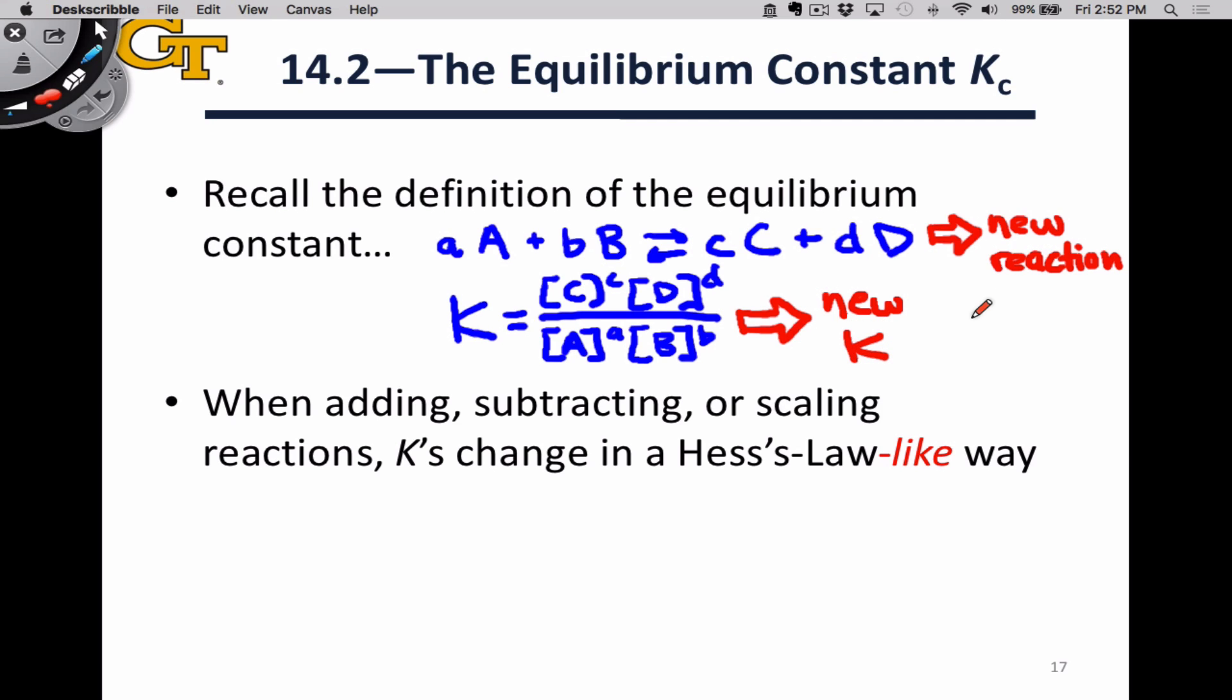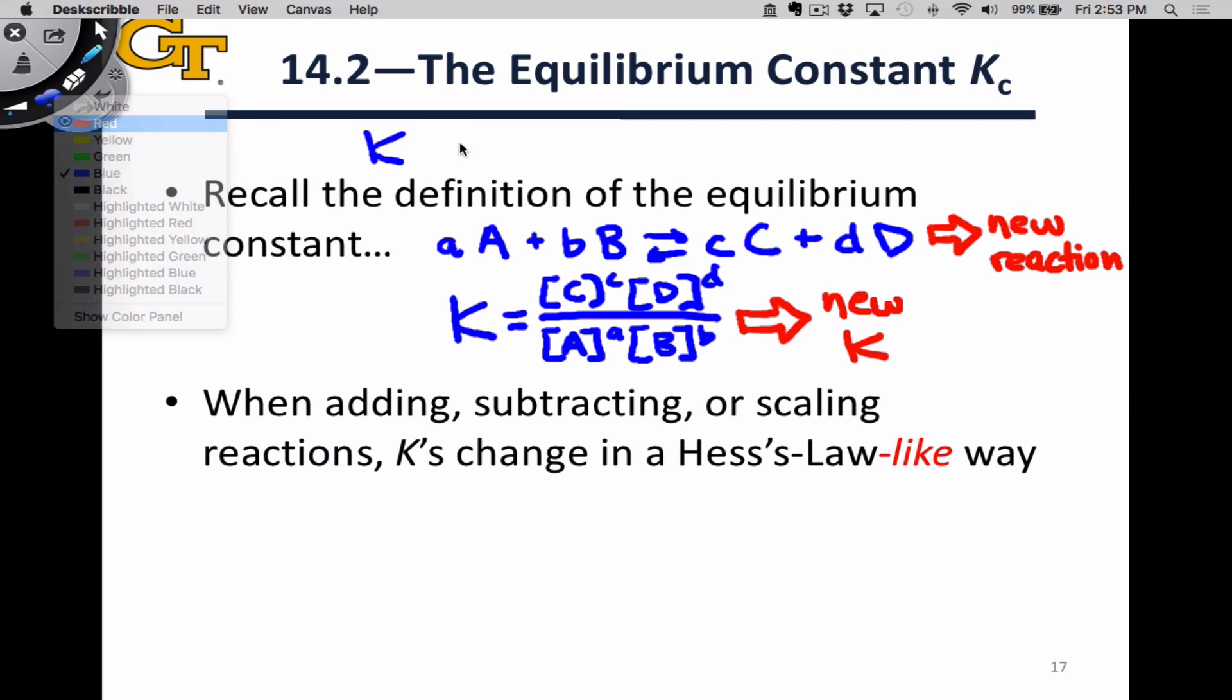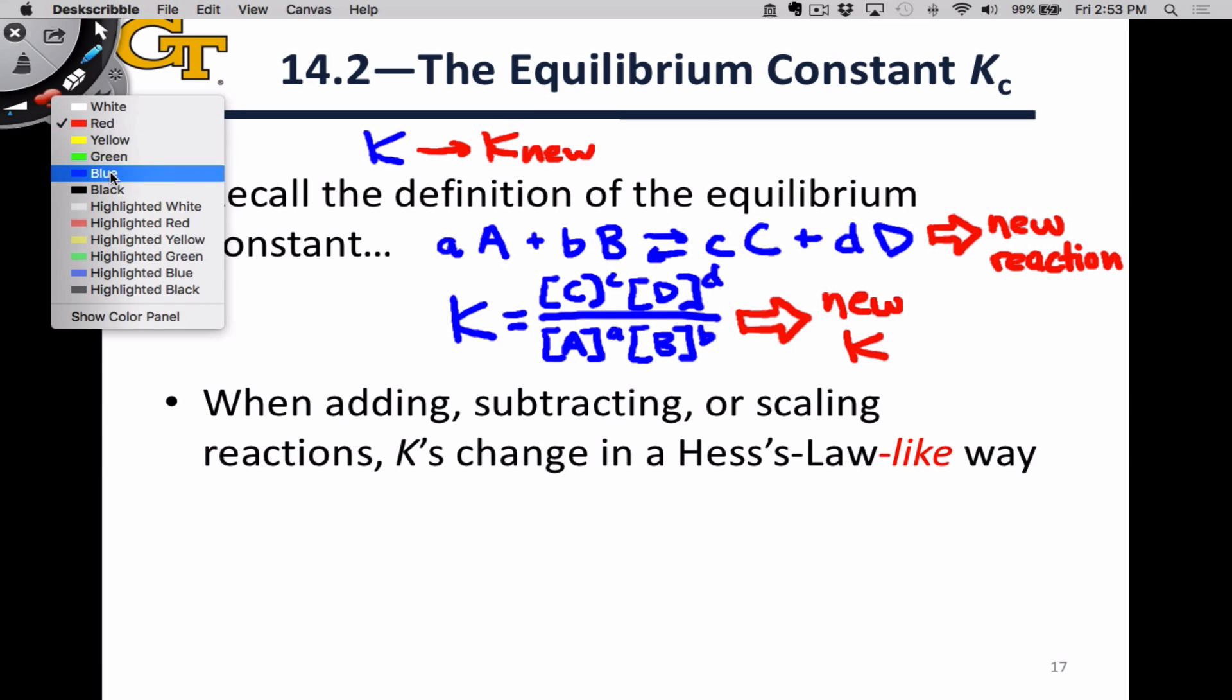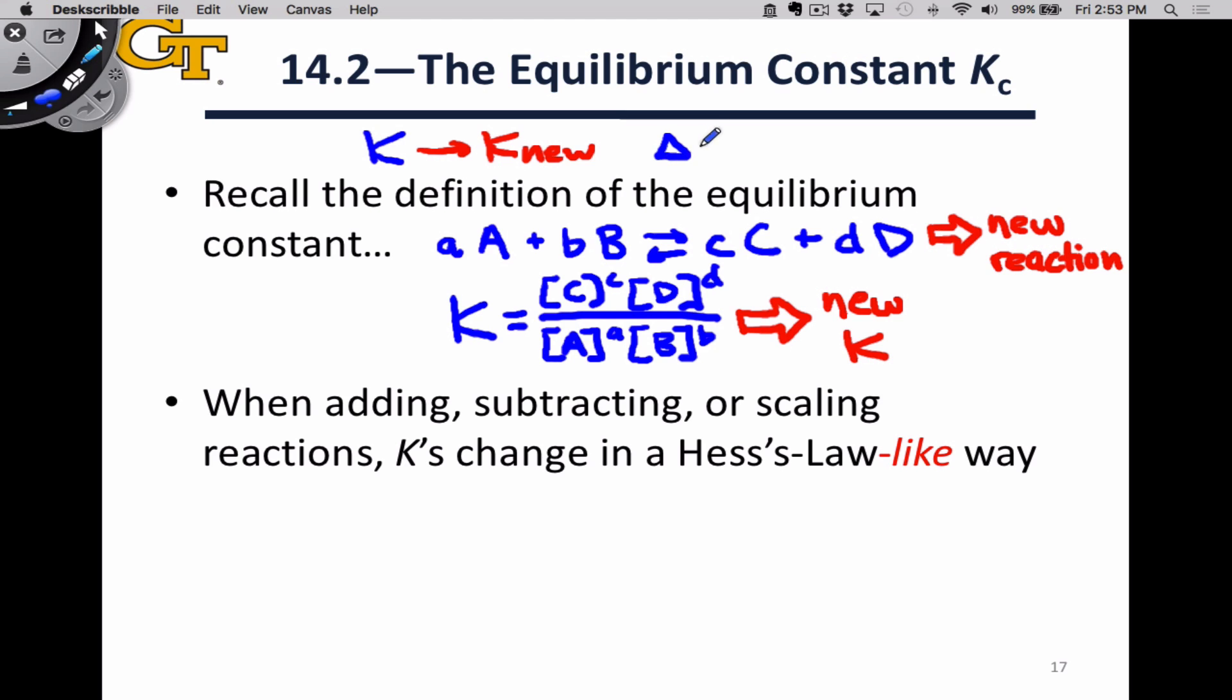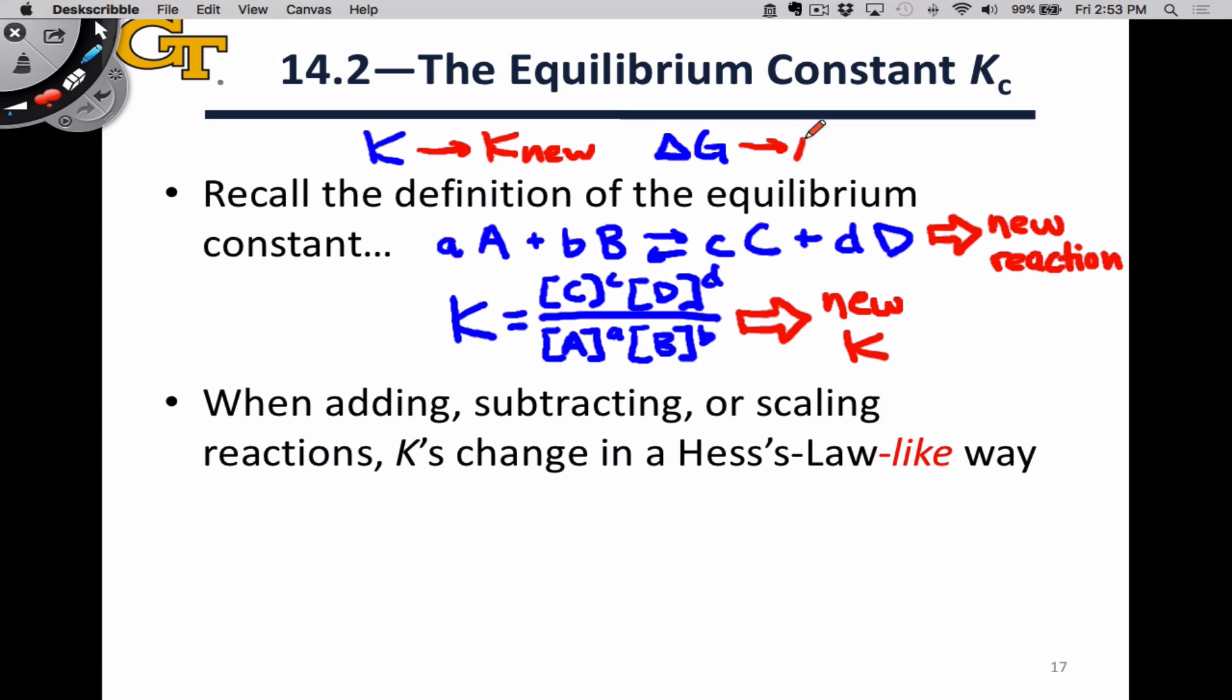The reason this is possible will become very clear when we get into chapter 17, but just to kind of foreshadow where we're going with this, the reason we can transform K for one reaction into K for a related reaction is because the delta G, the change in free energy for a given reaction is related to the delta G for the new reaction according to Hess's law. We won't get into the exact mathematical form of this relationship, but when you see the equations, I think you'll start to see where the relationship is going.